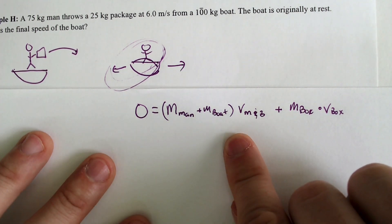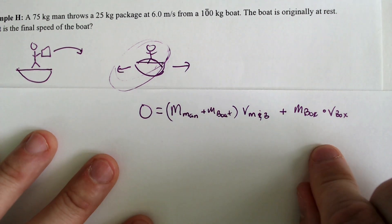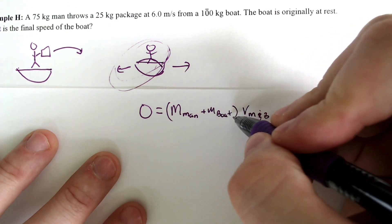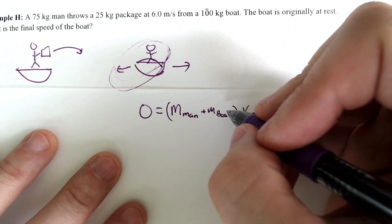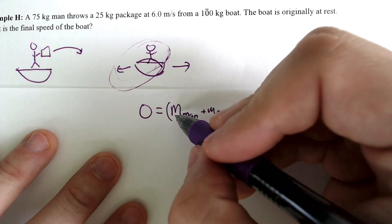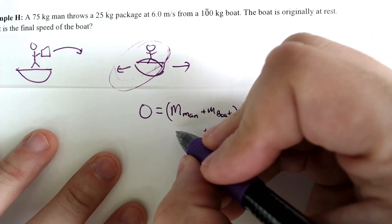These guys are going to be going in the negative direction, and they're probably not going to be moving very fast because it weighs a whole lot more than that box that we threw. So what is the mass of the man and the mass of the boat? Well, that would be 100 kilograms for the boat, and the mass of the man would be 75 kilograms.